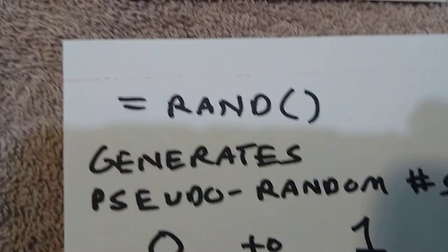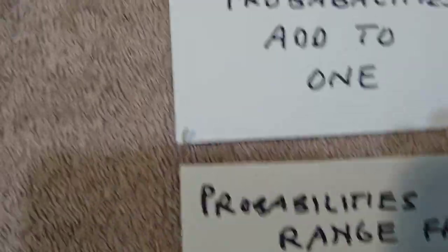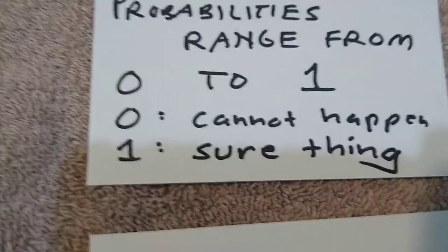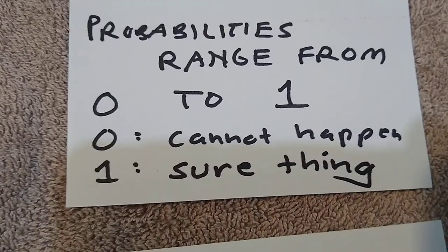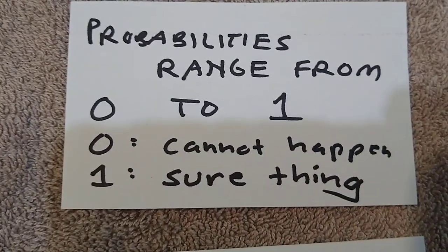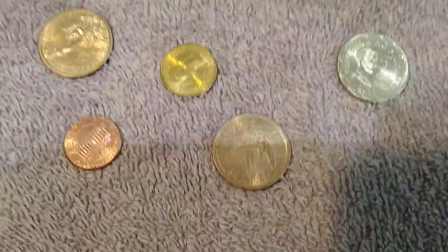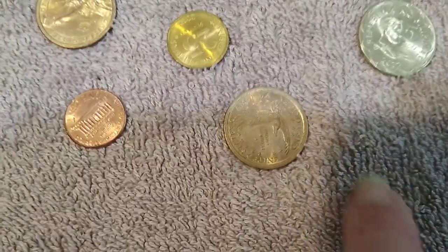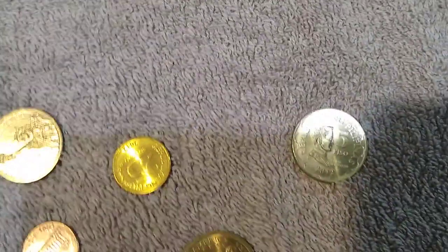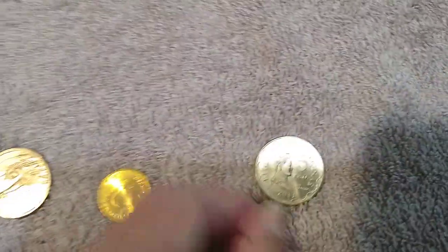Probabilities run from zero to one. One would be a sure thing and zero would be something that cannot happen. All probabilities add to one — for a coin, the probability of heads is one-half and the probability of tails is also one-half; if you add a half and a half you get one.